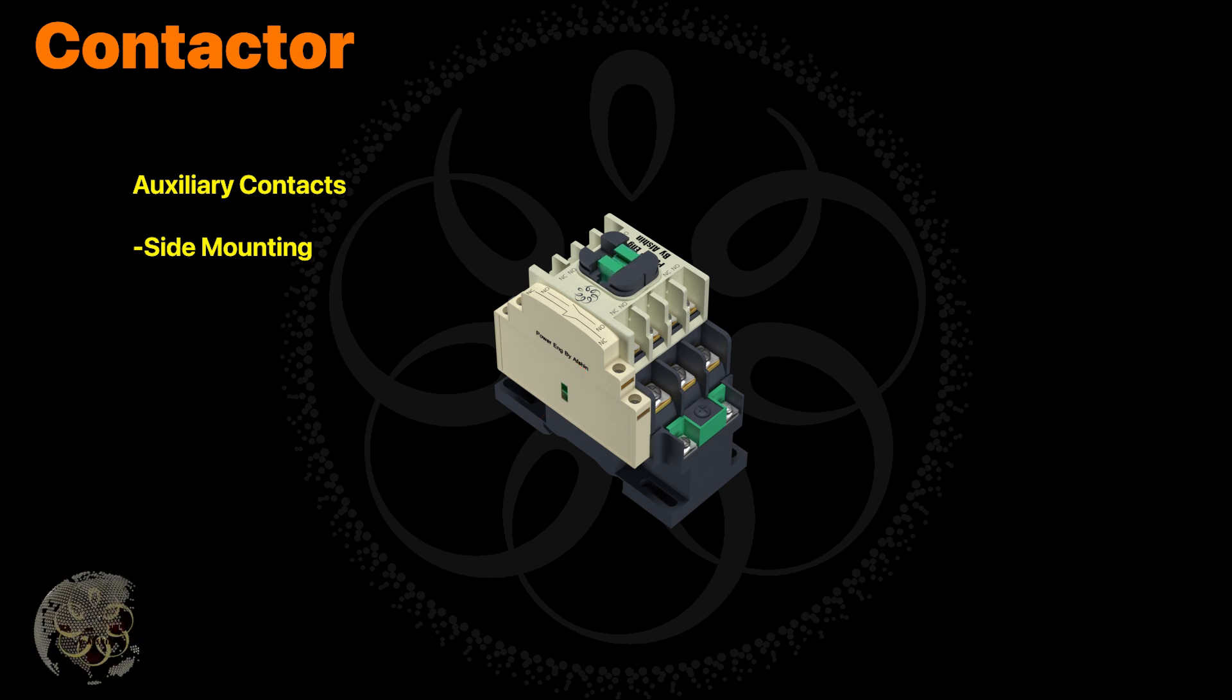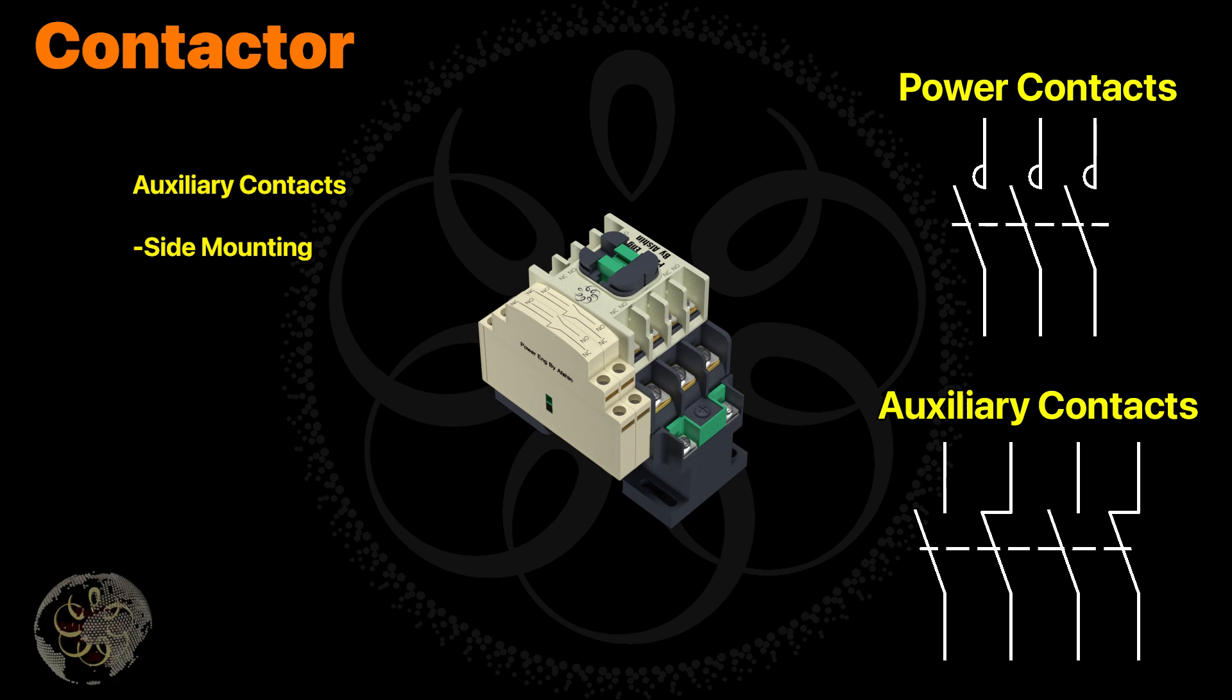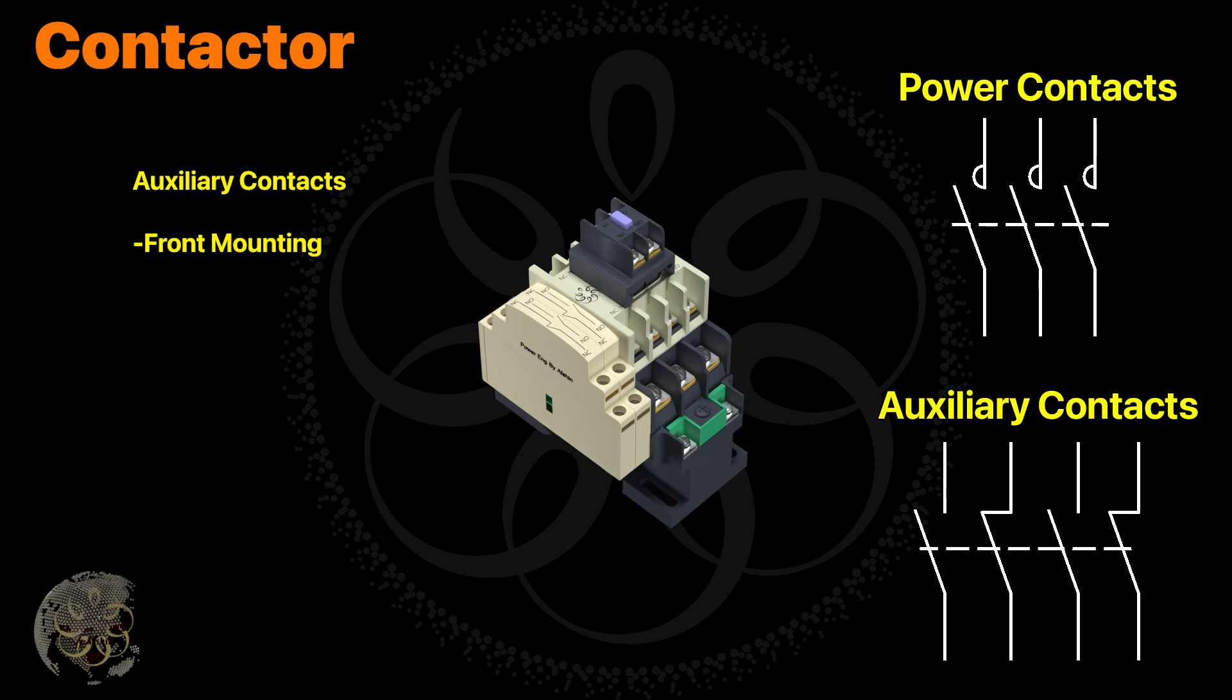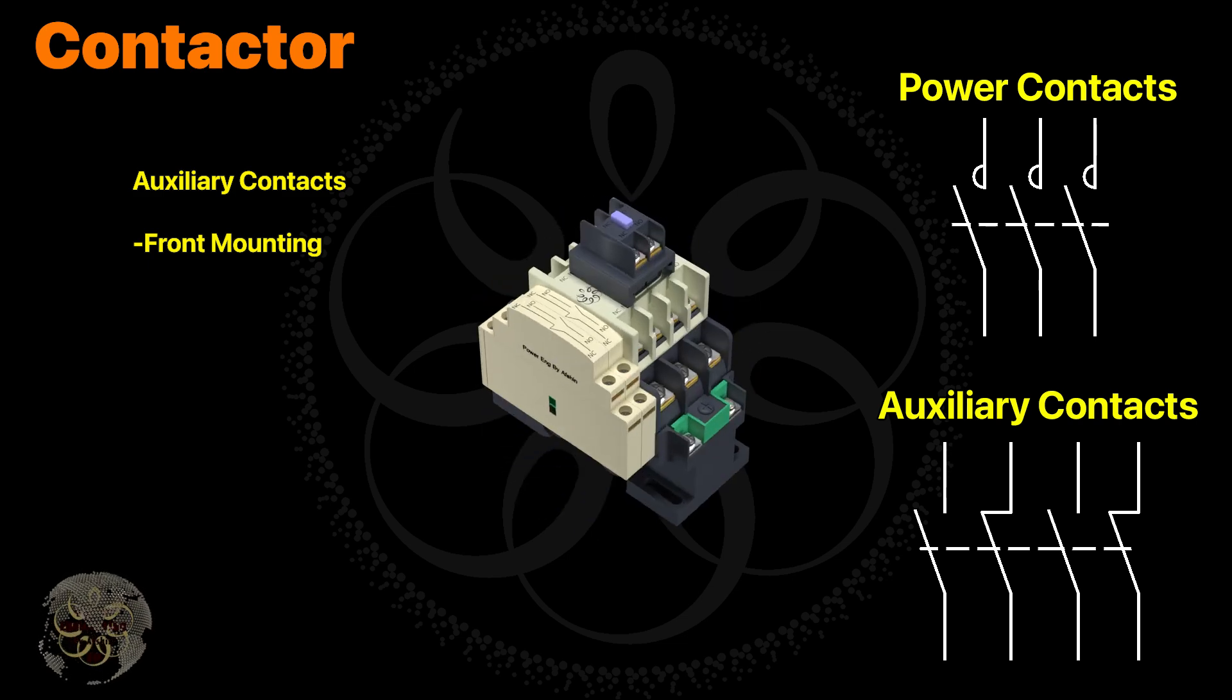You can even add multiple auxiliary contacts if needed. Each auxiliary contact typically includes one normally open (NO) and one normally closed (NC) contact. But some models have more contacts.